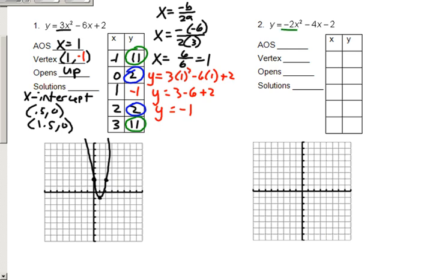Again, right here, negative 2 tells me this opens down. Okay, I'm going to do x equals negative b over 2a. x equals negative negative 4 over 2 times negative 2, so x equals 4 over negative 4, which equals negative 1.